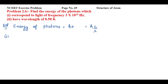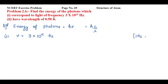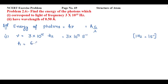In the first problem, we are given the frequency of light: ν = 3×10¹⁵ Hz. We convert this to second-inverse — since 1 Hz equals 1 s⁻¹, the frequency is 3×10¹⁵ s⁻¹. The value of Planck's constant h is 6.626×10⁻³⁴ J·s.